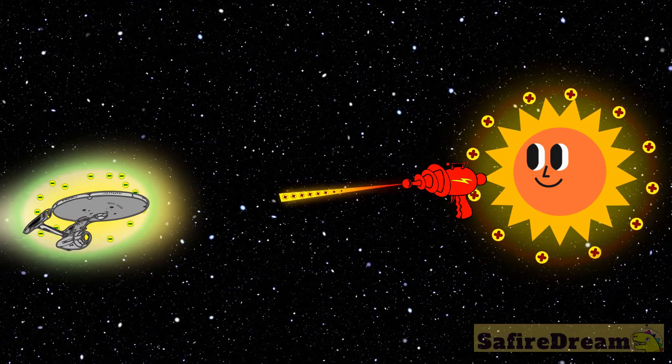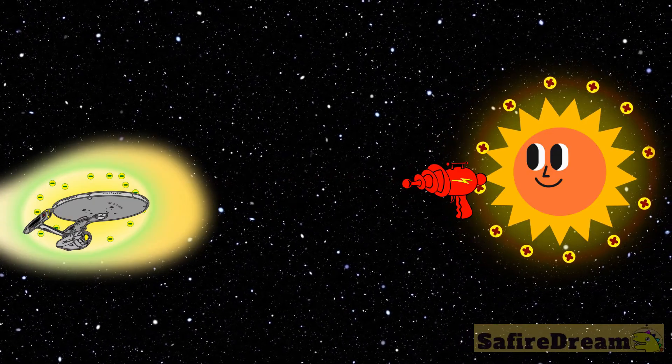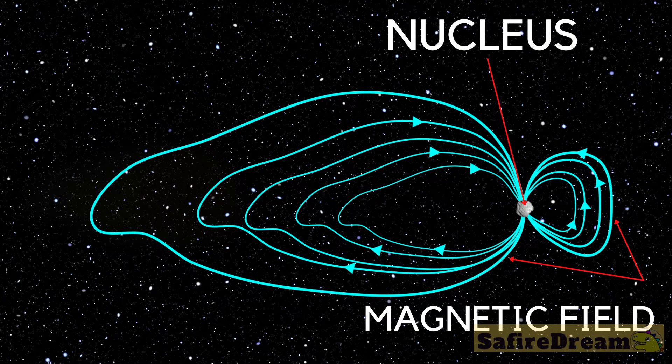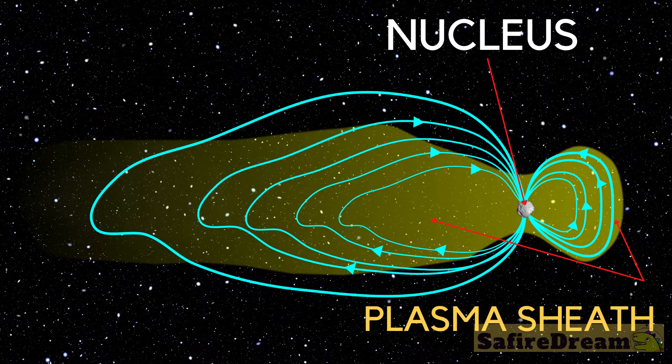Now, hang on a minute. How can a comet do this? Well, the rocky nucleus has a magnetic field, or magnetosphere, around itself. We can also call this a plasma sheath. What's a plasma sheath?